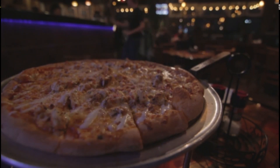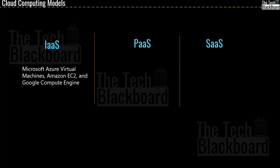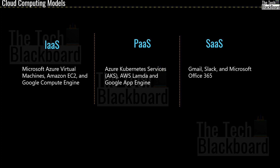For a better understanding, let me share some examples. In IaaS, we have Microsoft Azure Virtual Machines, Amazon EC2, and Google Compute Engine. On the PaaS side, we have Azure Kubernetes Services, AWS Lambda, and Google App Engine. And lastly, in SaaS, we have services like Gmail, Slack, and Microsoft Office 365. Now that you have examples of each computing model from all three major cloud providers, give yourself a chance to read more on each. Many of these will be covered in the subsequent parts.